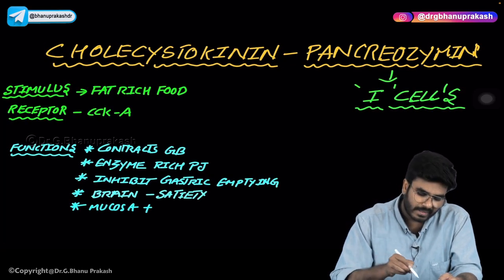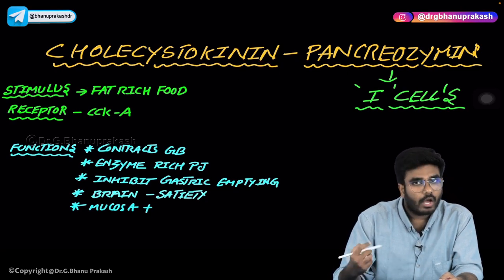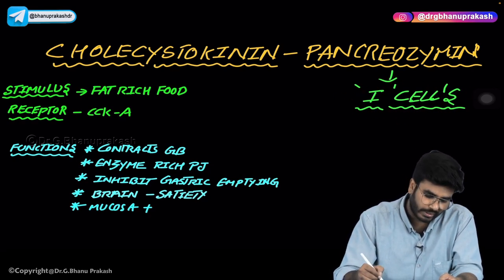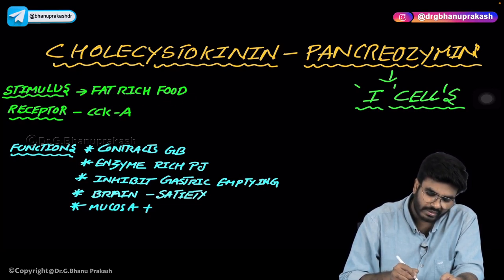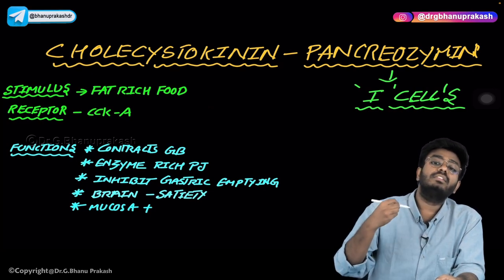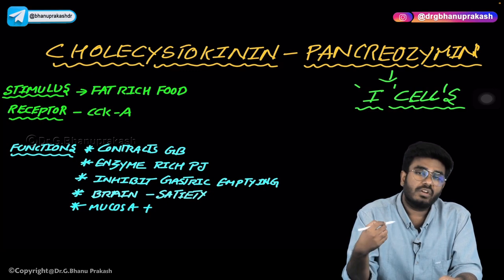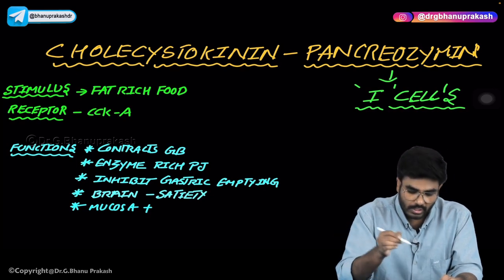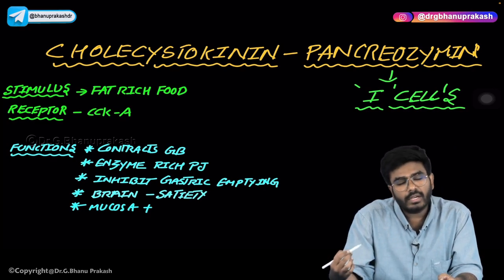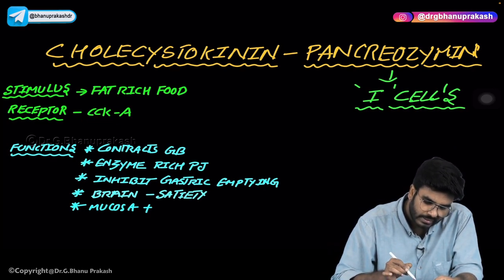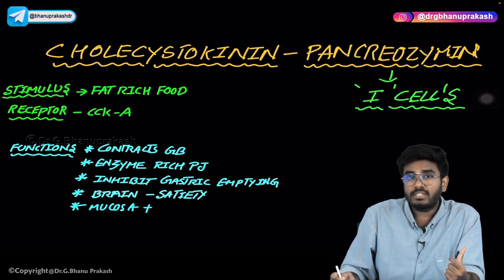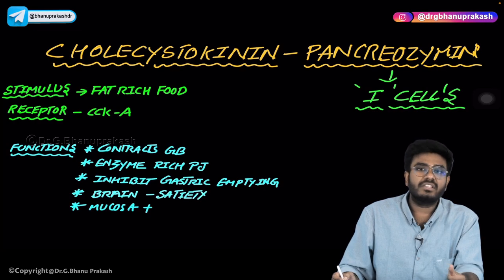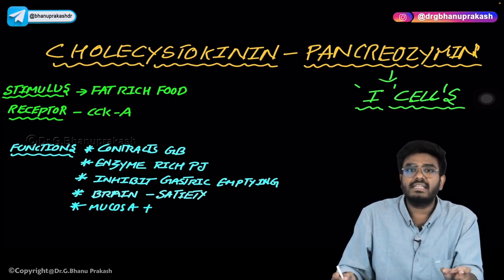Now let's talk about CCK-PZ — cholecystokinin-pancreozymin. It comes from I cells in the duodenum. The stimulus for the release of CCK-PZ is fat-rich food. Fat-rich food stimulates release of cholecystokinin, causing gallbladder contraction and bile release, which emulsifies and aids digestion of fats. The receptor for cholecystokinin is CCKA — that's why gastrin and cholecystokinin are in the same gastrin family, both using CCK receptors (gastrin uses CCKB, cholecystokinin uses CCKA).